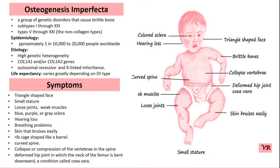Osteogenesis Imperfecta is caused by mutations in genes responsible for producing Type 1 collagen, which is critical for bone strength. The prevalence of Osteogenesis Imperfecta is estimated at 1 in 15,000 to 20,000 individuals worldwide. Prevalence can vary based on the specific type of OI and geography, as some types of OI are rarer than others.